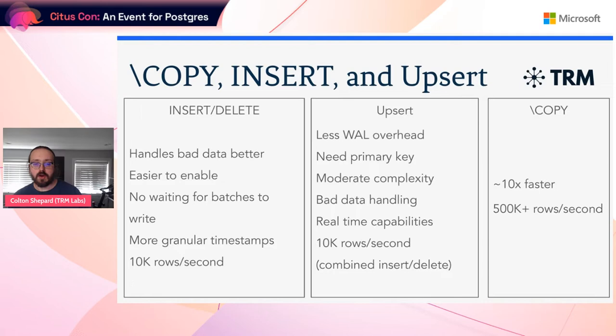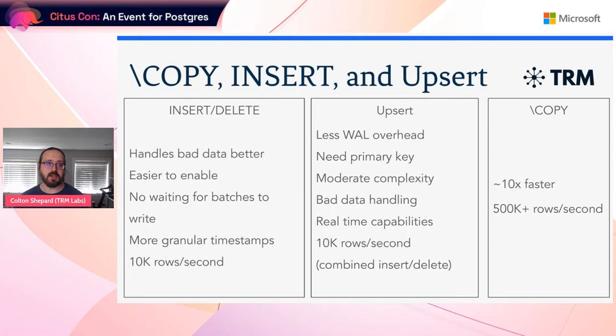Finally, we've got copy. Copy is stupidly fast. Ten times faster is a good lower bound, and I have seen production instances break 500,000 rows a second just using copy. The biggest downside is bad data handling — if there's a single malformed line in the entire file you're trying to copy into Postgres, you're going to get a failure and it's going to unwind everything. The other disadvantage is that timestamps can get a little weird if you have on-update or on-insert clauses.